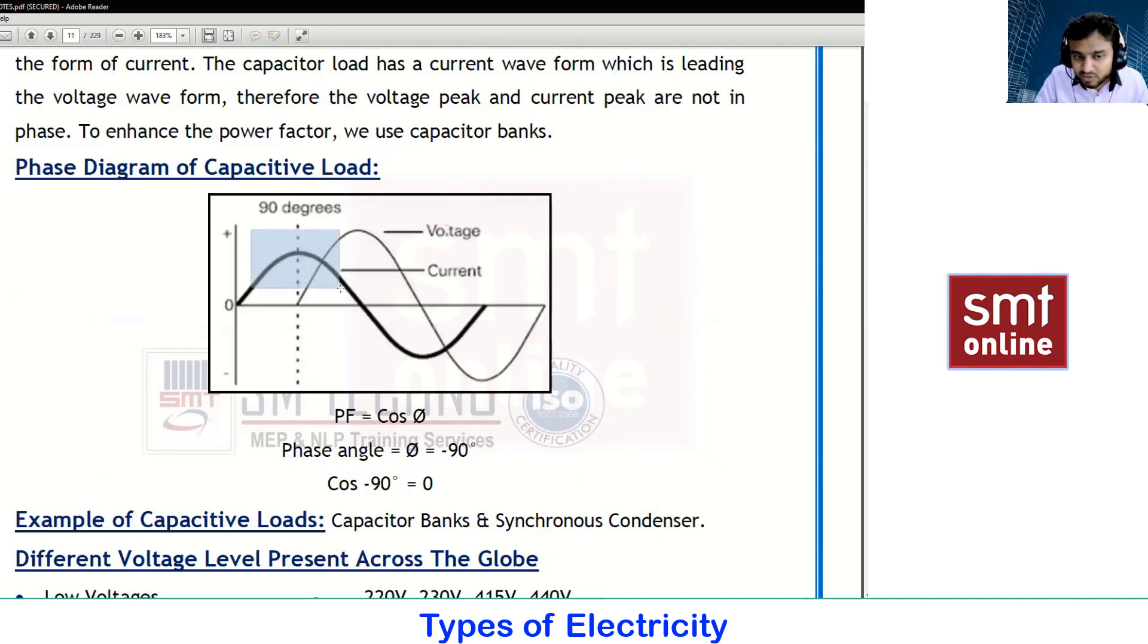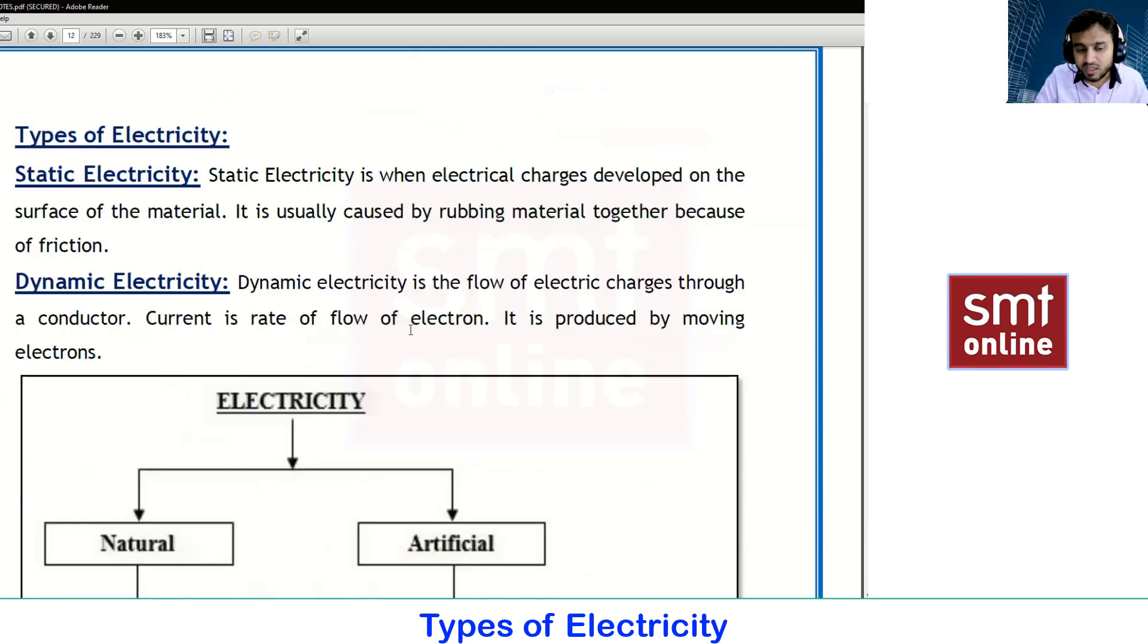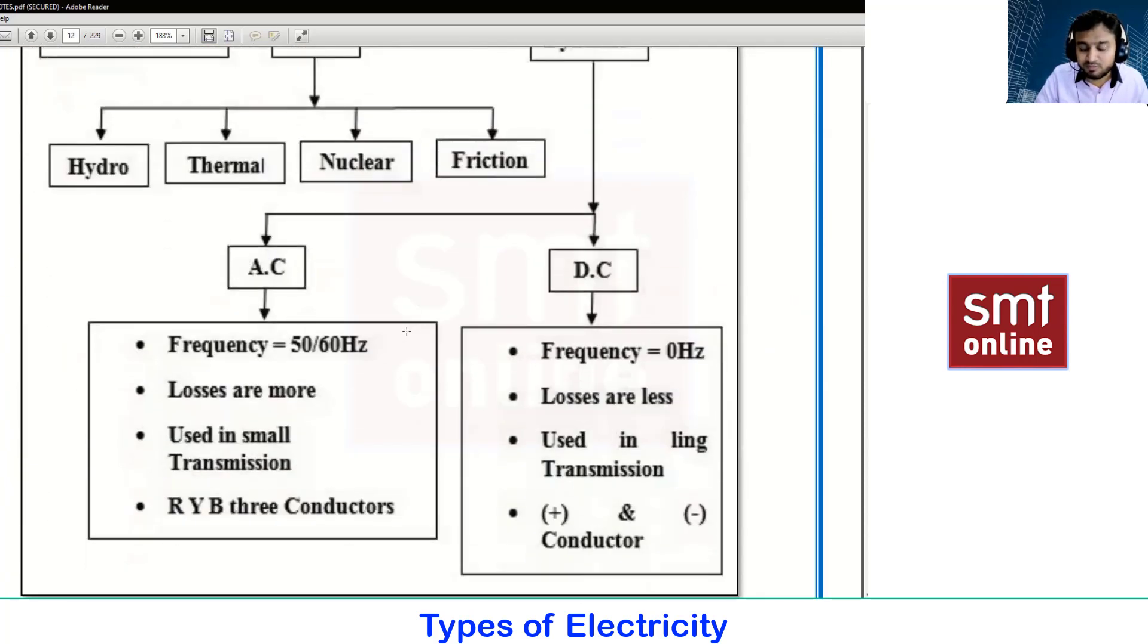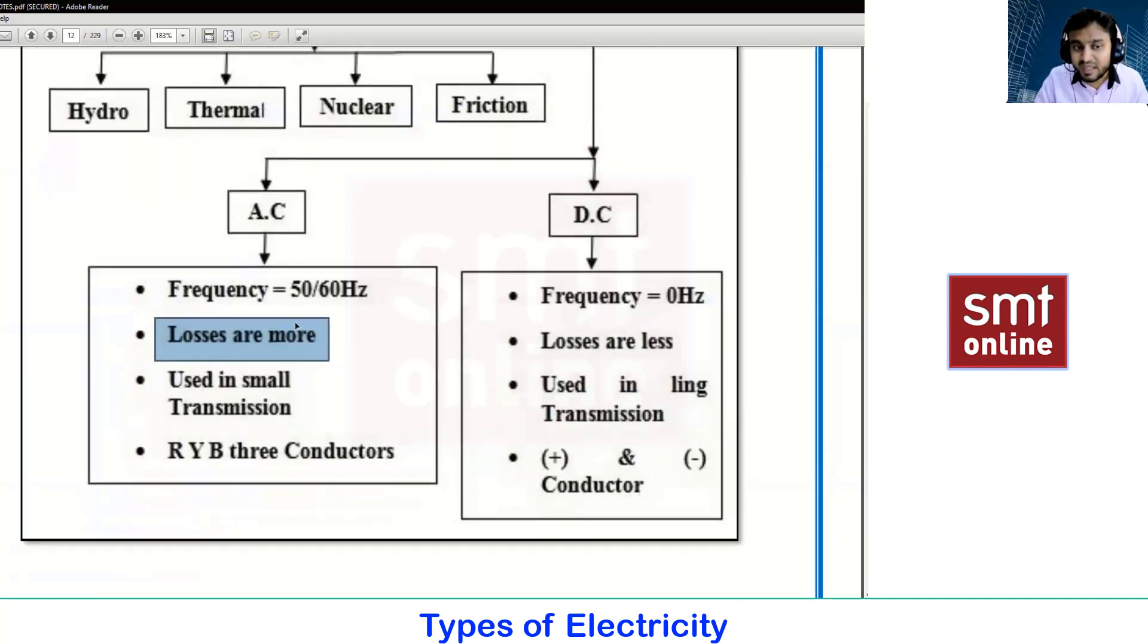In this AC waveform you can see we have a positive cycle and a negative cycle. This complete waveform gives you one cycle. Because of this positive and negative cycle, we are having more losses. This AC transmission is used in small areas till 300 kilometers only.